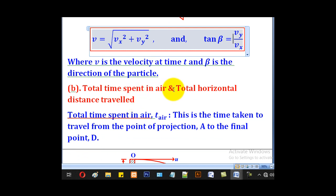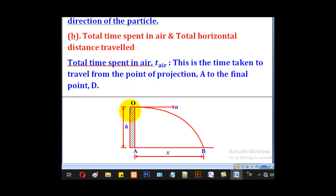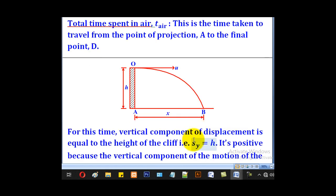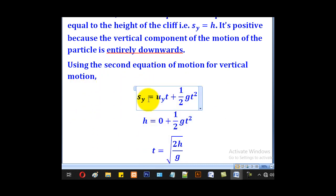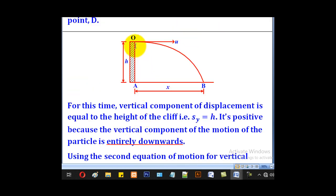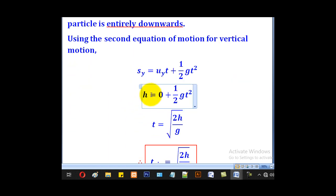For total time spent in air and total horizontal distance, the total time spent in air is the time taken to move from O to B, and the total horizontal distance is AB. We shall consider the second equation of motion for vertical motion. So sy is equal to uyt plus a half gt squared. The displacement s is equal to positive h, positive because the motion is entirely downwards.